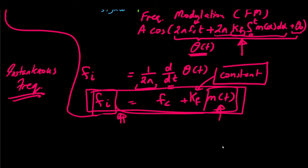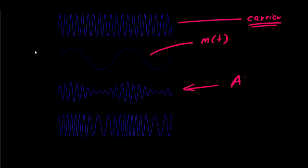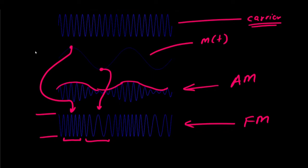Consider a low frequency message signal m(t) and a carrier signal cos(2π fc·t + θ₀). In amplitude modulation, the information is stored in the amplitude of the modulated signal. In FM, high amplitude of the message signal corresponds to a high instantaneous frequency, and low amplitude corresponds to low instantaneous frequency, but the overall amplitude of the modulated signal remains constant — only the instantaneous frequency changes. In AM, the frequency was not changing; the amplitude was changing with respect to the message signal.